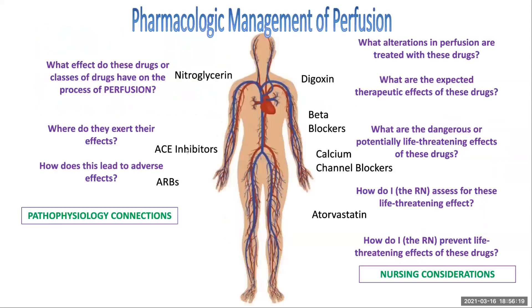So when we come down to pharmacologic management of perfusion, these are the drugs or the classes of drugs that we're going to focus on. Remember, we have cardiac glycosides like nitroglycerin. We have digoxin, beta blockers, calcium channel blockers. We have our statin drugs like atorvastatin, our ACE inhibitors like lisinopril and enalapril, our ARBs like losartan.